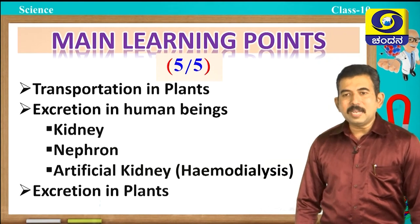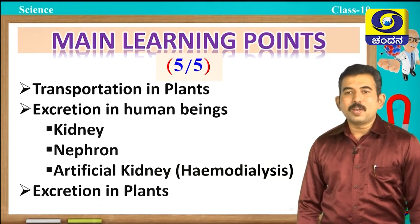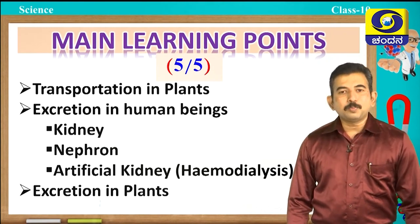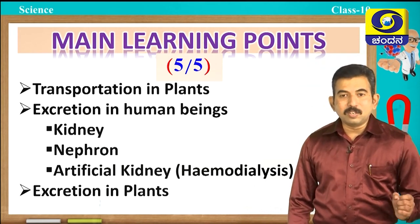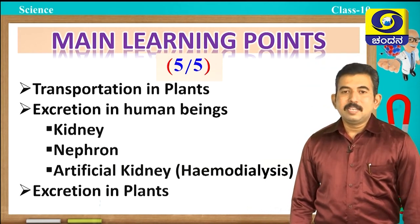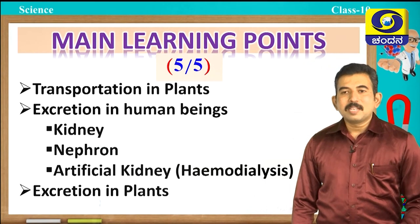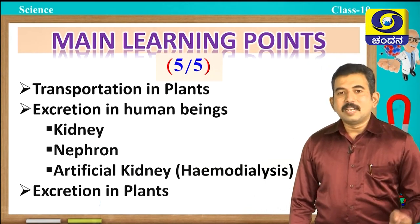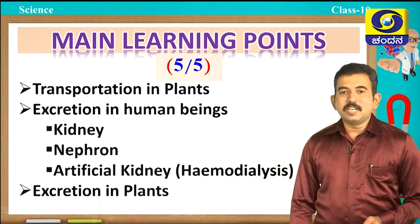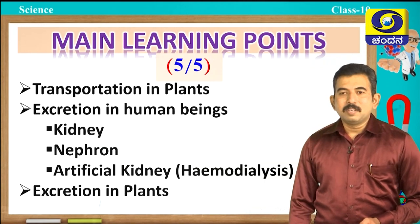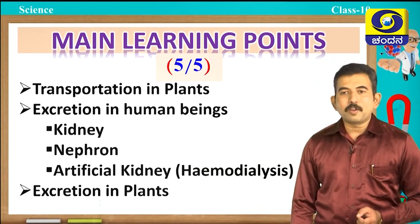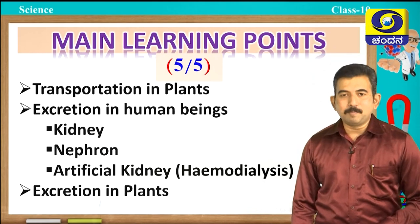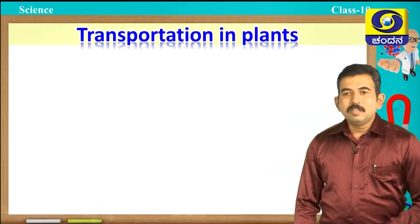The main learning points we are going to discuss today are: transportation in plants, excretion in human beings, structure of kidney, functional unit of kidney, then artificial kidney — that is hemodialysis — and also excretion in plants.